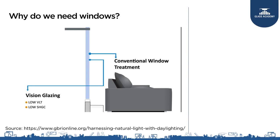Let us now see what a conventional window would look like. Here you see a window which is at a sill height of 2 and a half feet and at a lintel height of say 7 and a half feet. Through this window we can see outside and we can also get a lot of daylight. However, because it is in the vision level, we would like to keep the visual transmittance a little low so that we do not get glare. Therefore, it will bring a little less daylight than what a clear glass would have brought in.